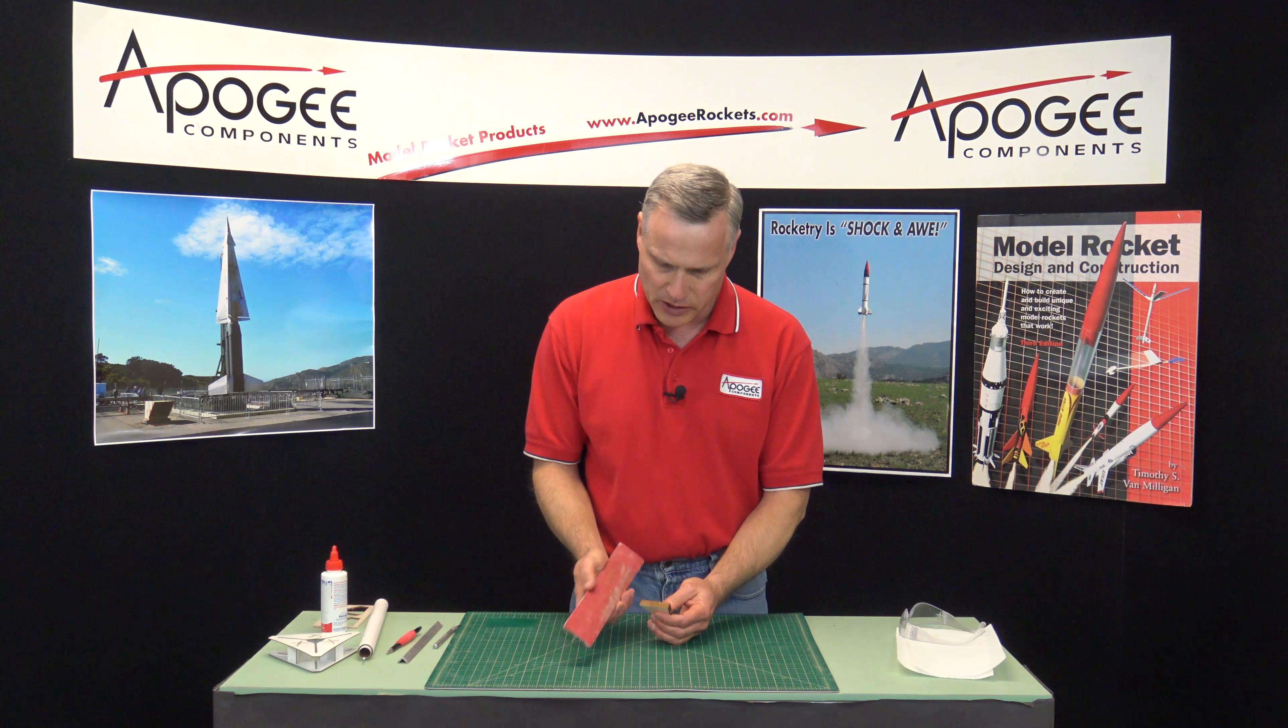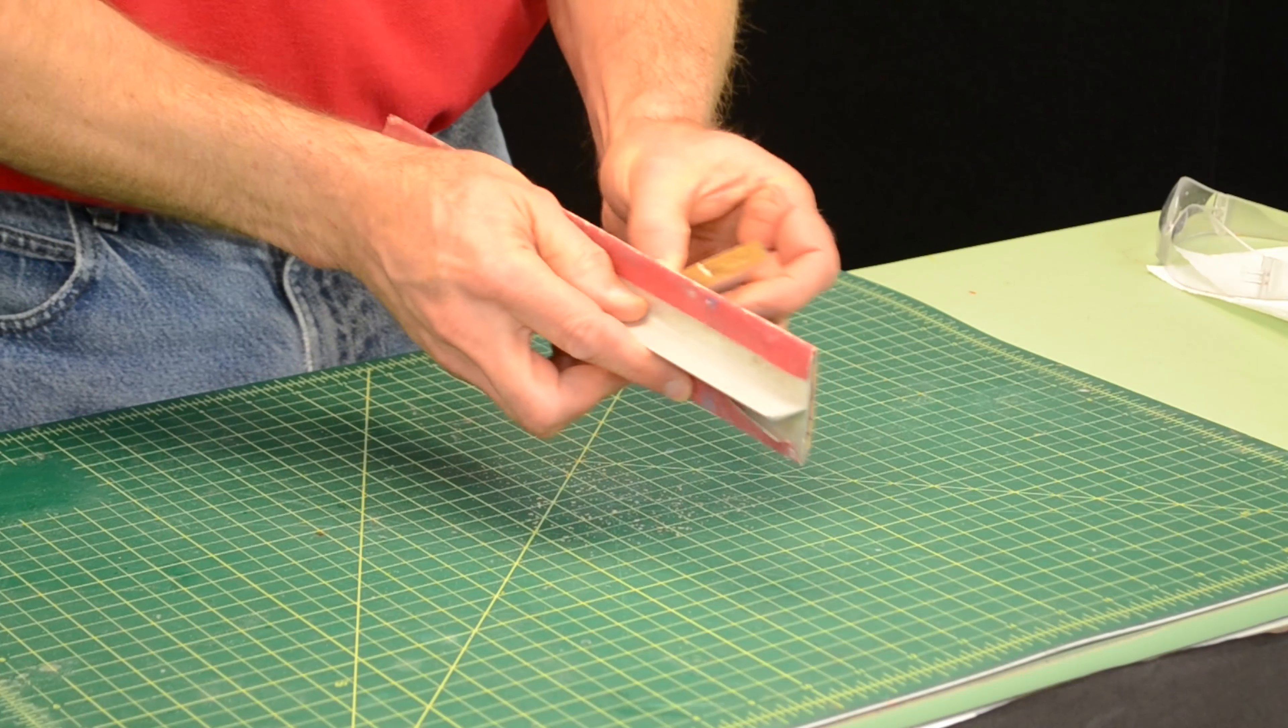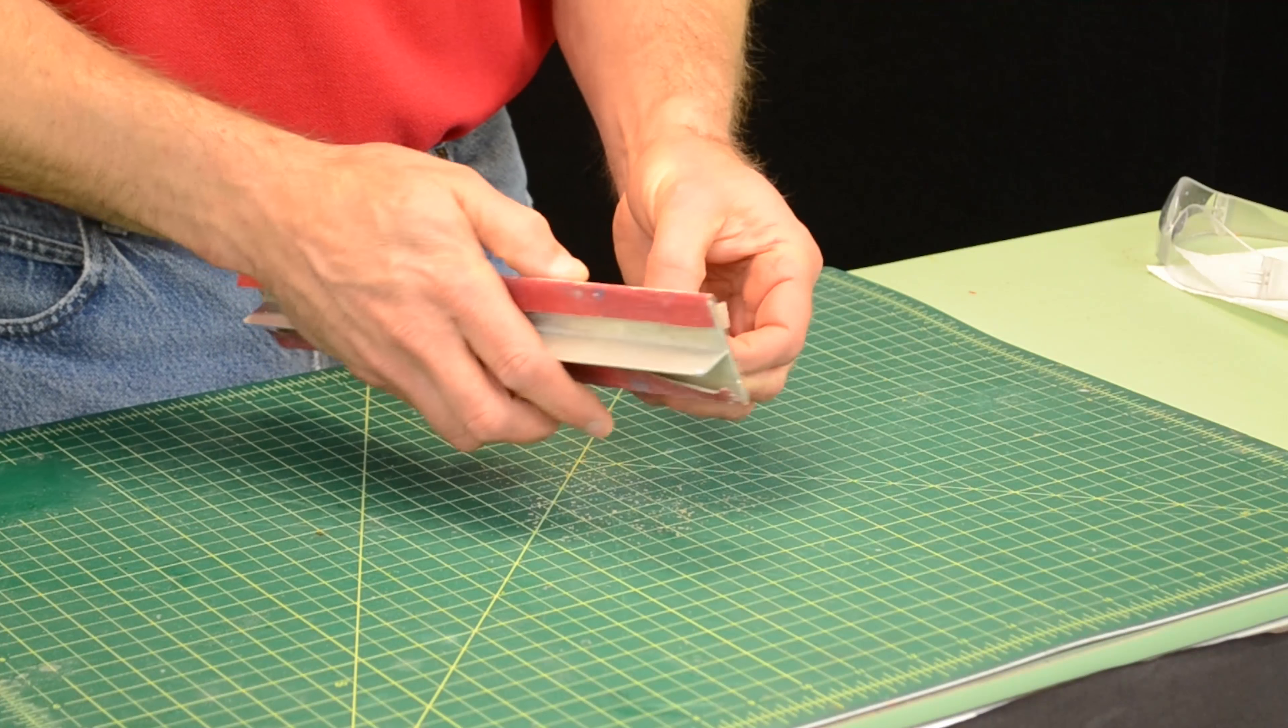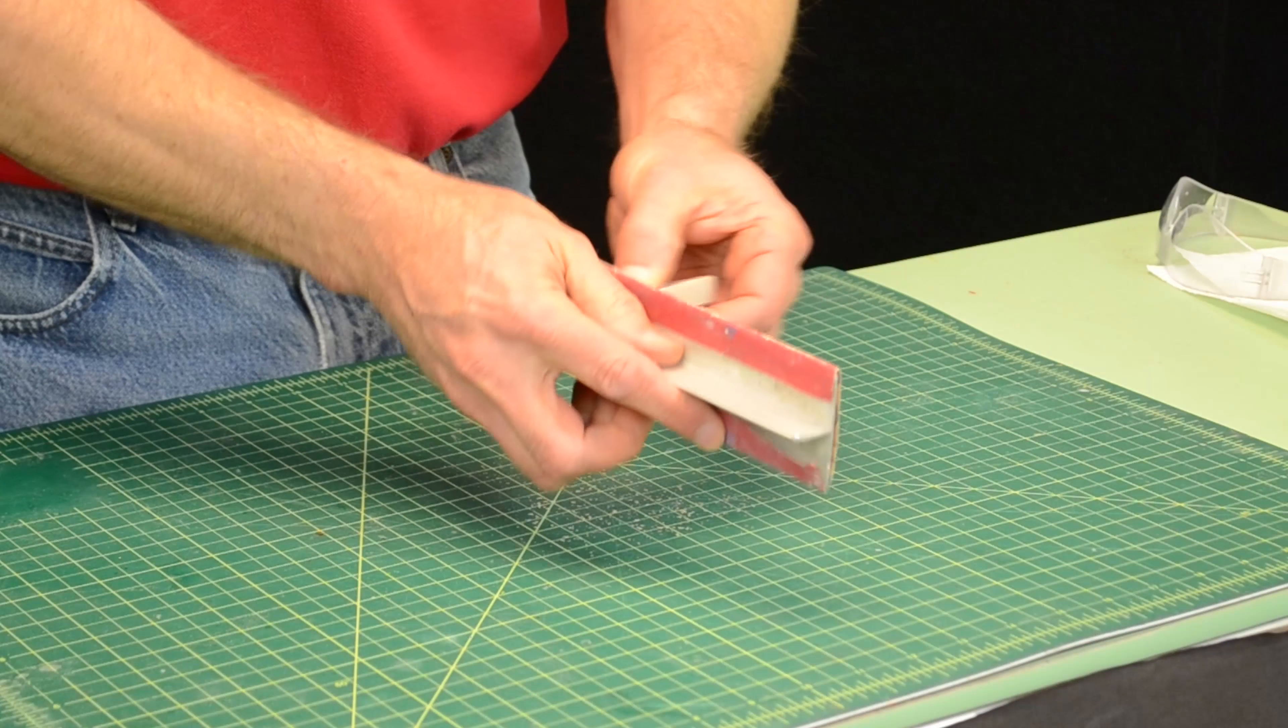I'm going to take a sanding tee or sanding block with some medium grit sandpaper. I want to just sand those little tabs off to all four edges. And it also takes off the burn from the laser.